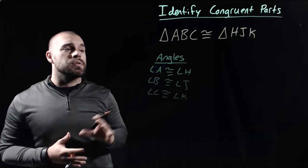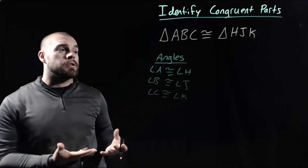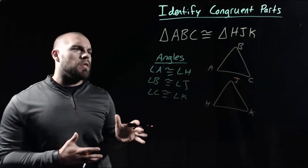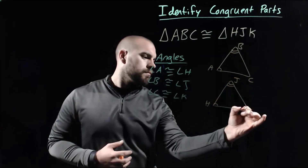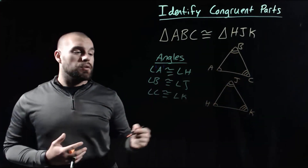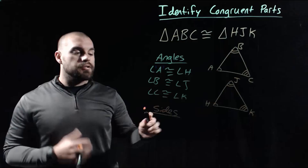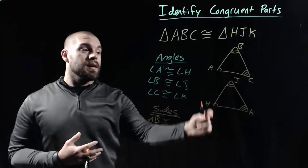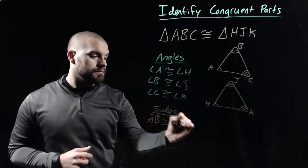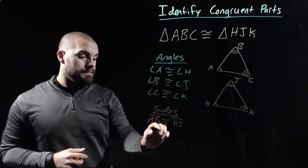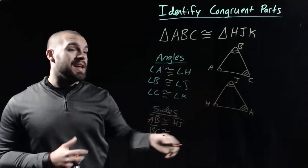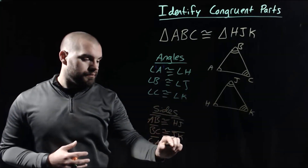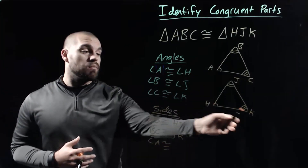The sides might be a little trickier, so I'm going to use this congruent statement to draw out a picture and mark out all the things that are congruent. Looking at side AB first, AB has to be congruent to HJ. Then BC has to be congruent to JK. And lastly, the side from C to A is going to have to be congruent to the side from K to H.